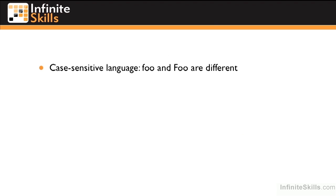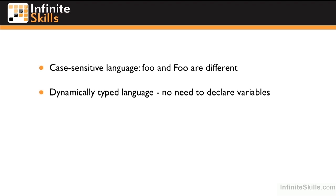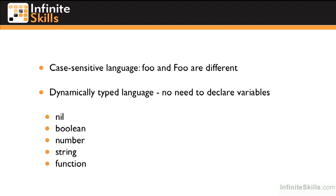It's a case-sensitive language, which means that foo with a lowercase f and foo with an uppercase f are completely different. It's a dynamically typed language, so there's no need to declare variables ahead of time, which some people love and some people hate, but that's the way Lua is. The types available in Lua are nil, boolean (which is true or false), a number — and there's no difference between floating point and integer in Lua, everything's either a number or it's something else — a string, a function, and a table. A table is the only kind of complex data type in Lua.